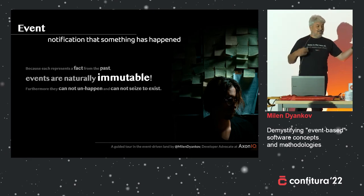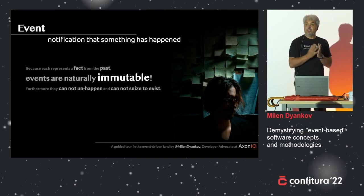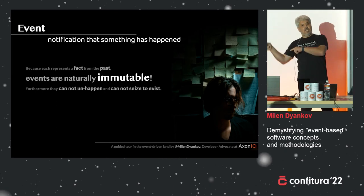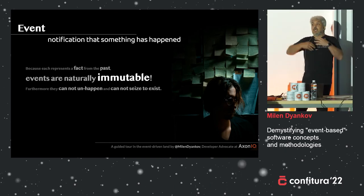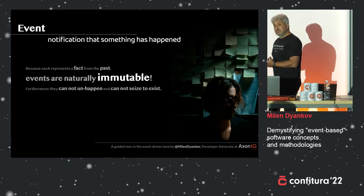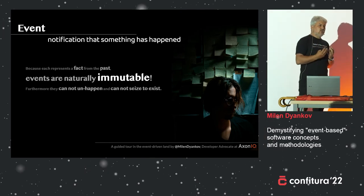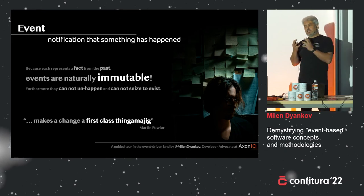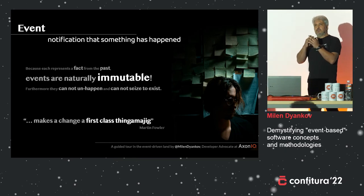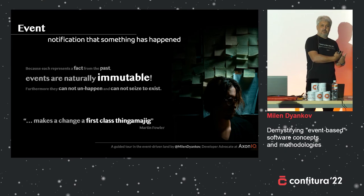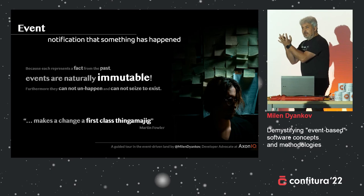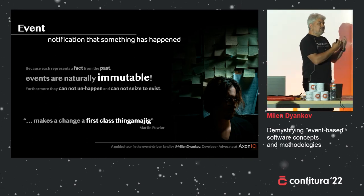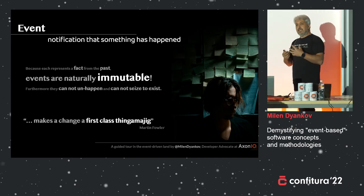Events are exactly that. If something has happened, it cannot unhappen. There may be something else happening that recovers or returns the state to what it was before, but that is again something new happening. Whenever something has happened, it cannot unhappen magically. So events are by nature immutable. But they have one more powerful characteristic that Martin Fowler points out: when you do stuff with events, you come up with a solution to represent a change within your system, which makes events a first-class concept — a thing that represents a change. That is what makes event-driven systems so powerful.